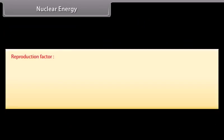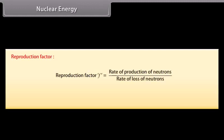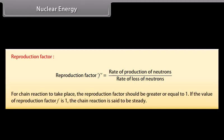Reproduction factor. It is defined as the ratio of rate of production of neutrons to the rate of loss of neutrons. For chain reaction to take place the reproduction factor should be greater or equal to one. If the value of reproduction factor F is one, the chain reaction is said to be steady.